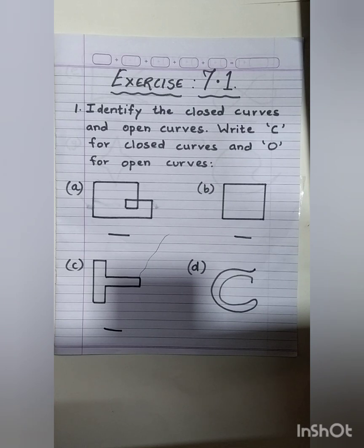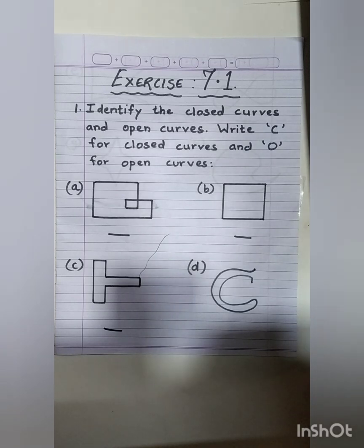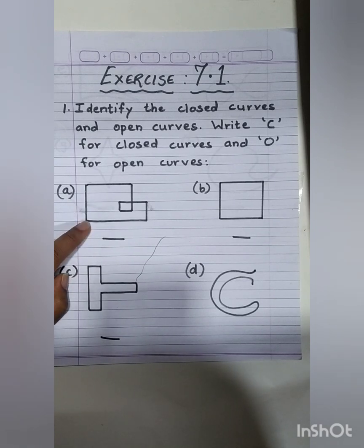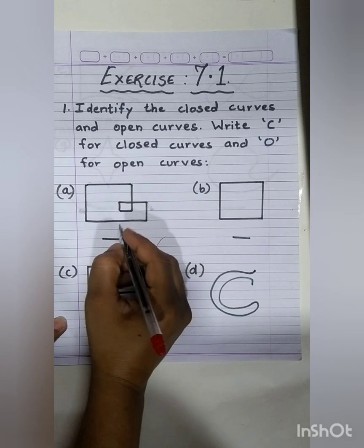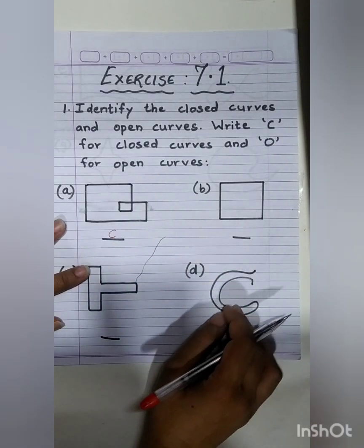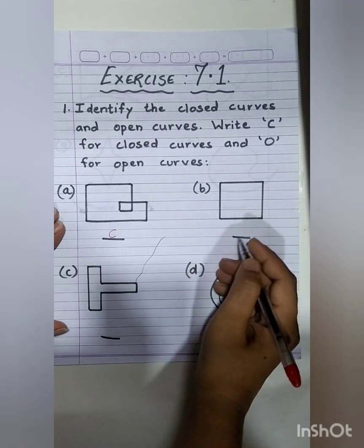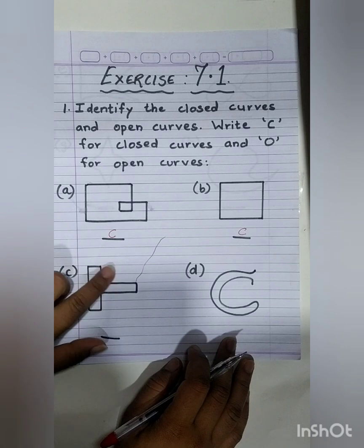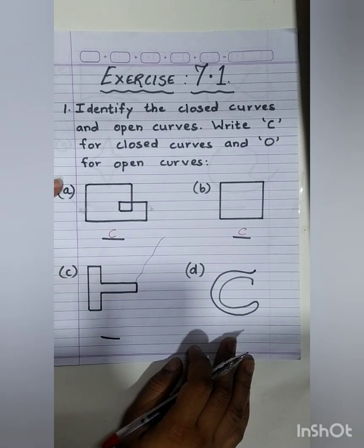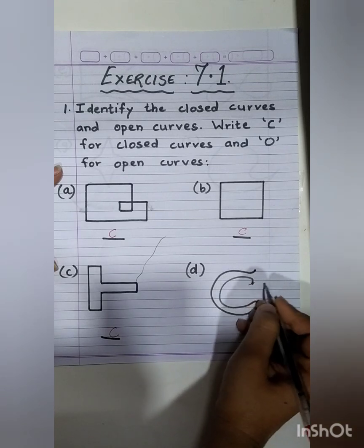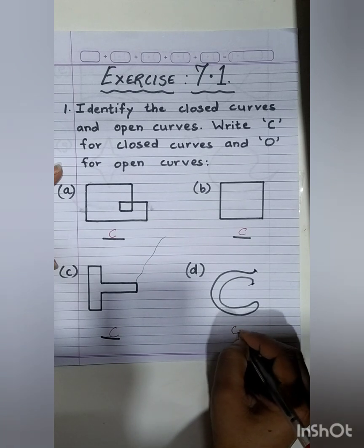Now let us start solving exercise 7.1. Identify the closed curves and open curves — write C for closed curves and O for open curves. The first figure has no two different end points, so this is a closed curve — we will write C. The second figure also has no two different end points, so we write C again. In the third one there are also no two different end points, so closed curve again. In the last one we can see two different end points, so this is an open curve.